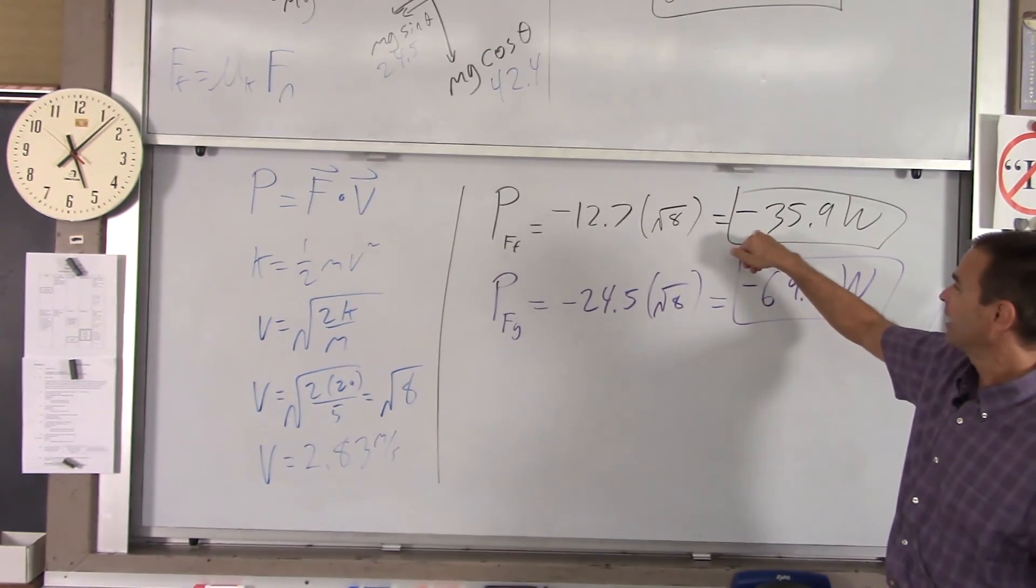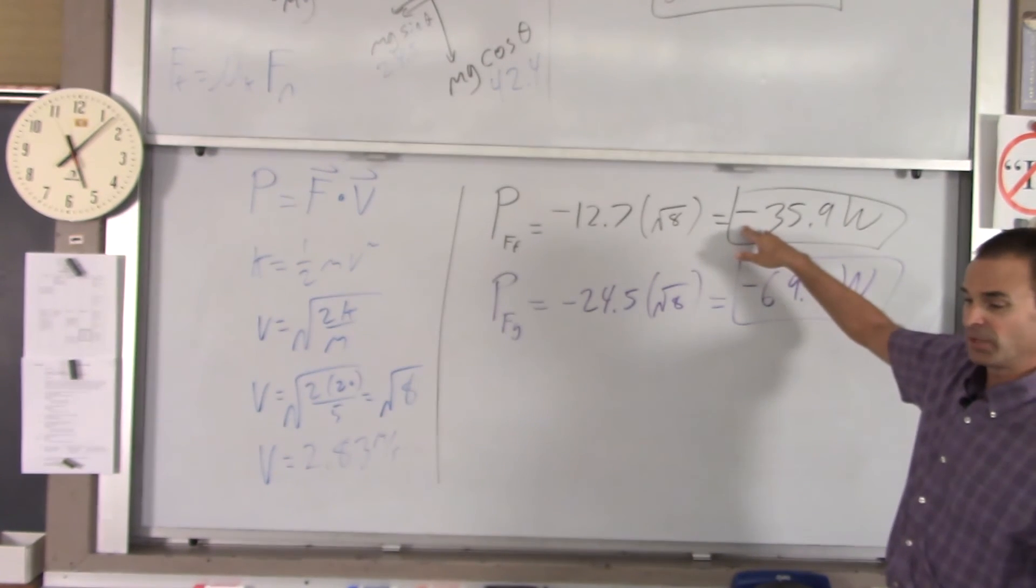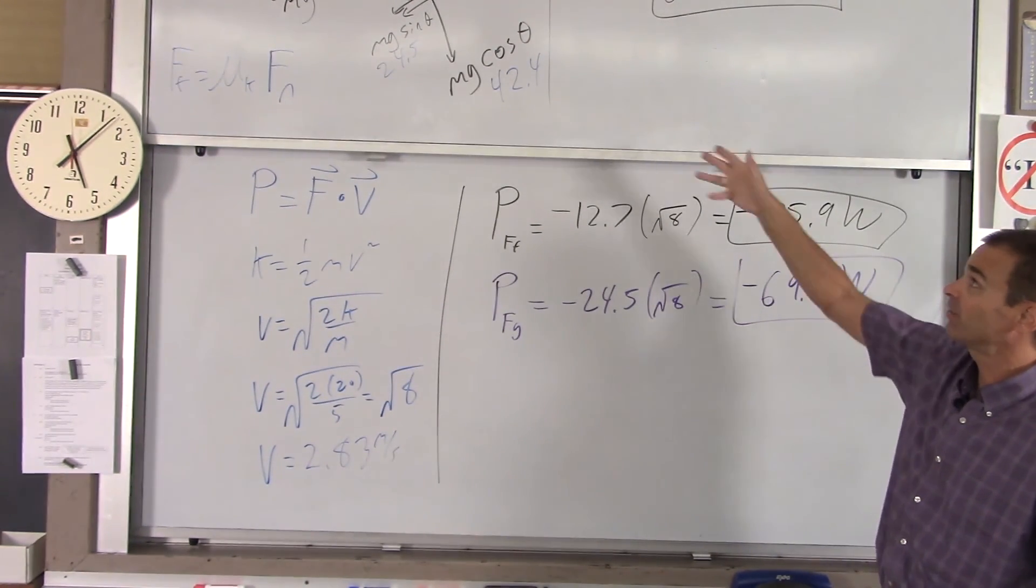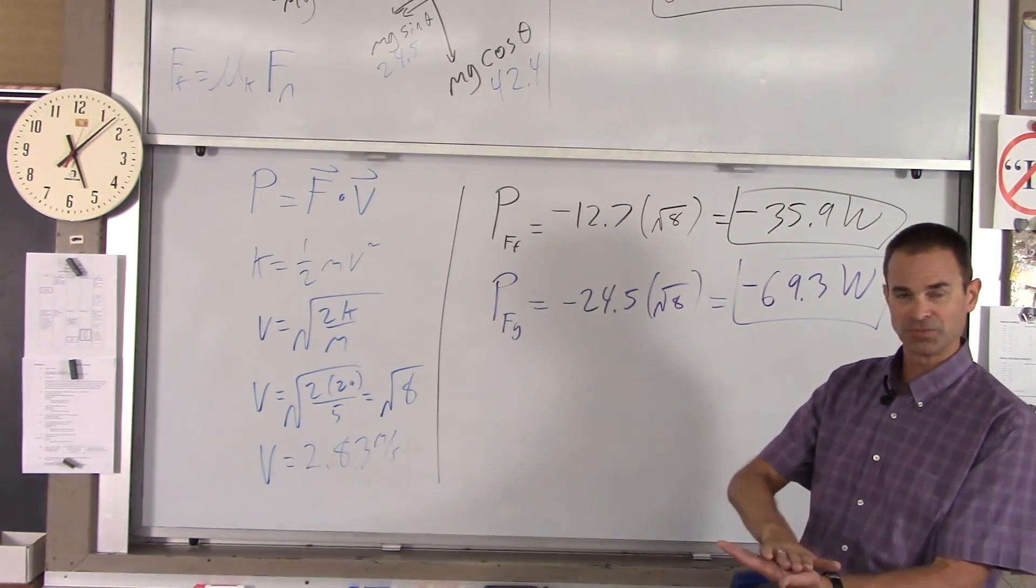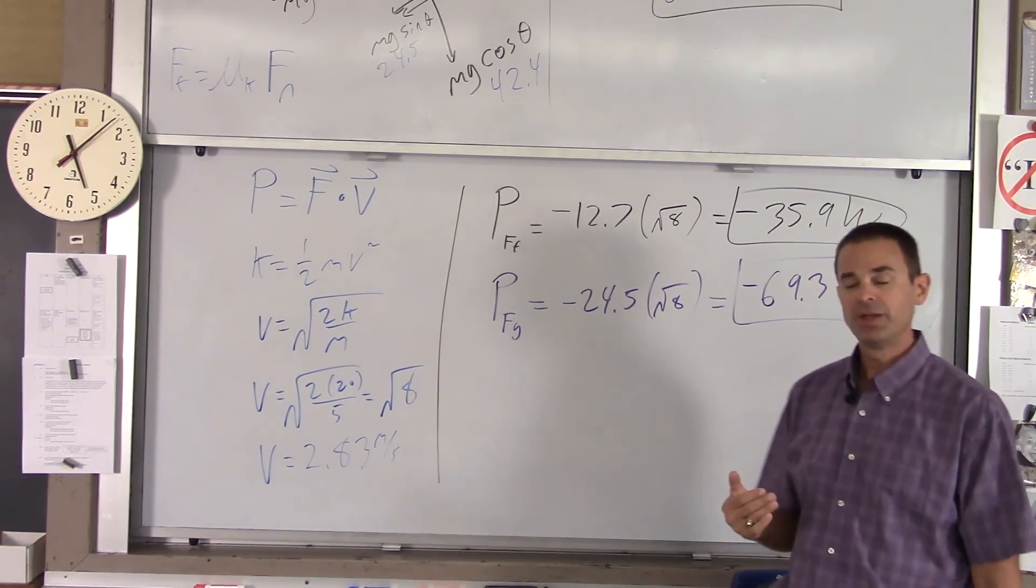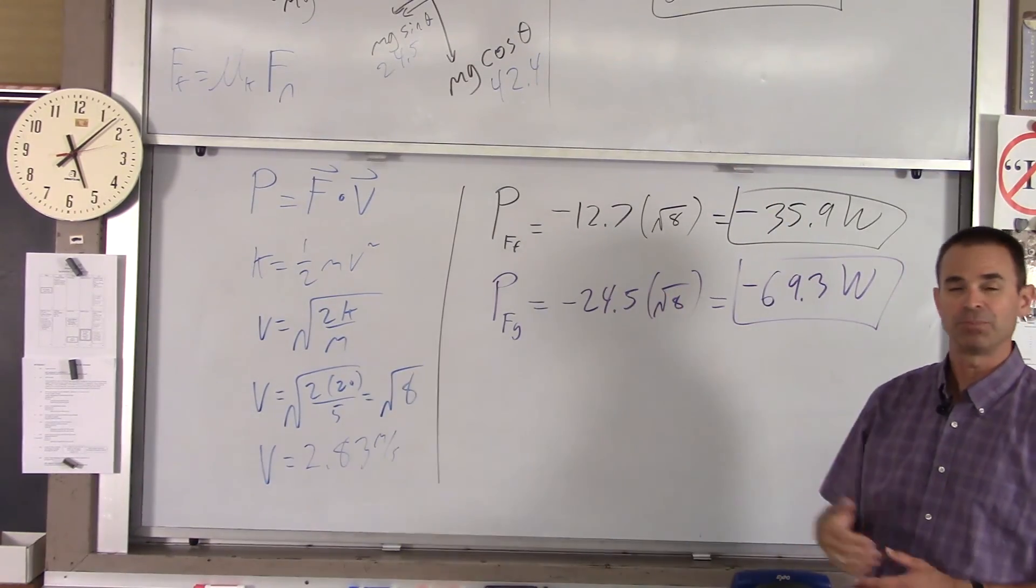Friction, on the other hand, that's a non-conservative force, which we'll talk about. That's taking the energy and turning it into something that's not mechanical, in this case, heat. So, it's changing mechanical energy in the crate into heat, and that heat is dissipated along the surface of the crate and the surface of the incline. So, what each force is doing with energy is different, but both of them are taking energy away from the crate as the crate flies up the incline.